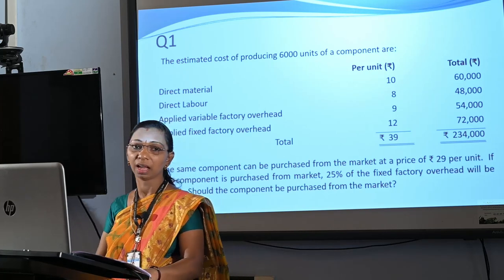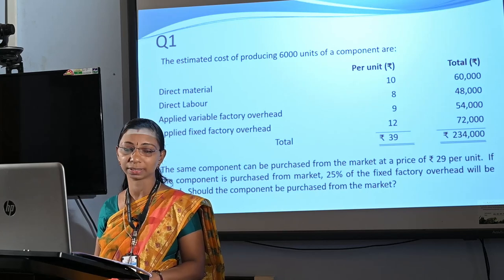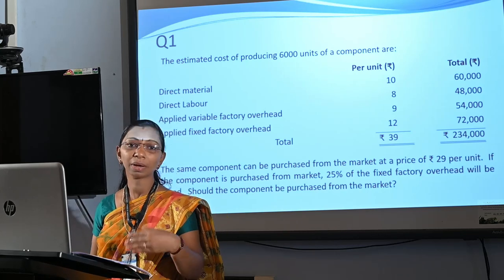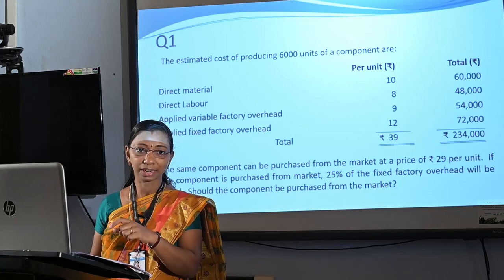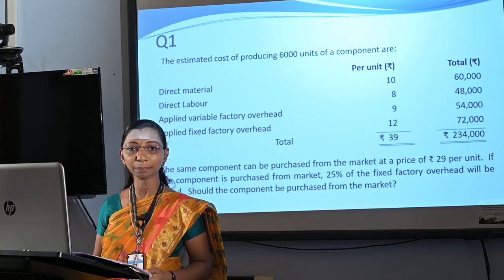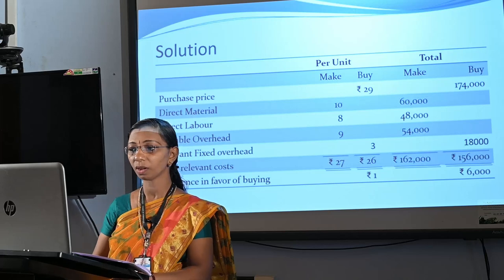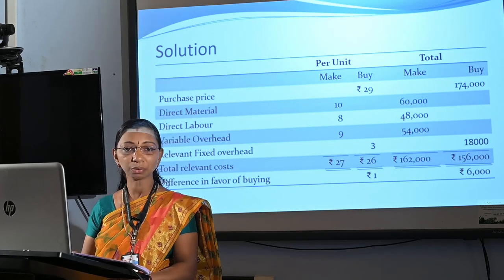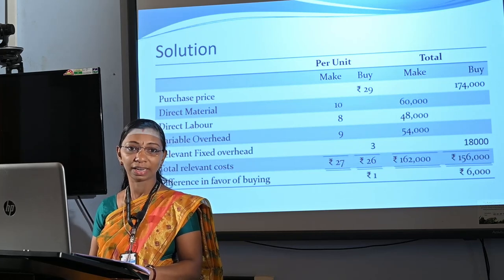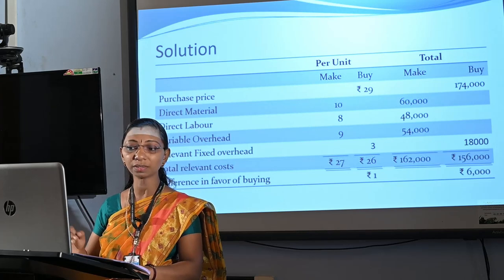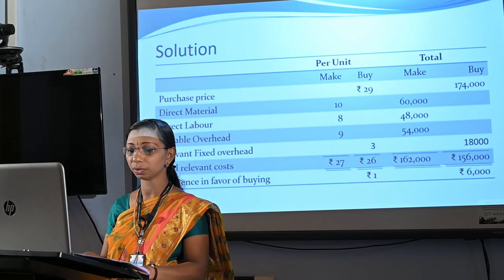Here we have to decide whether to manufacture the product by the company itself or to purchase it from outside. For this decision, we compare the manufacturing cost with the purchase cost. Let me go for the solution. First of all, we have to calculate the marginal cost of manufacturing the product. Marginal cost means direct material cost plus direct labor cost plus variable overhead.